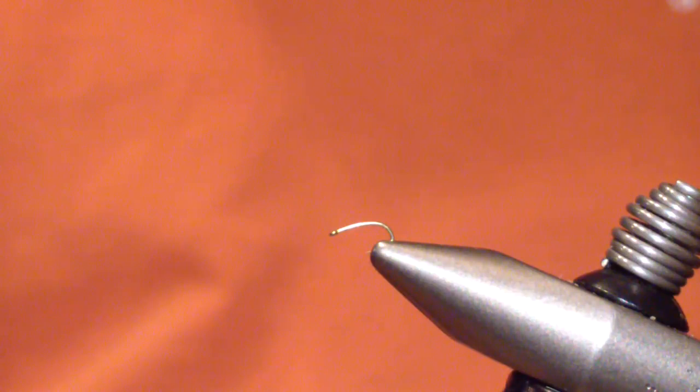Today we're going to tie the khaki midge. The khaki midge is my most fished midge pattern. It has been for a number of years. It's a very common color midge that comes off through most of central and southern Pennsylvania.